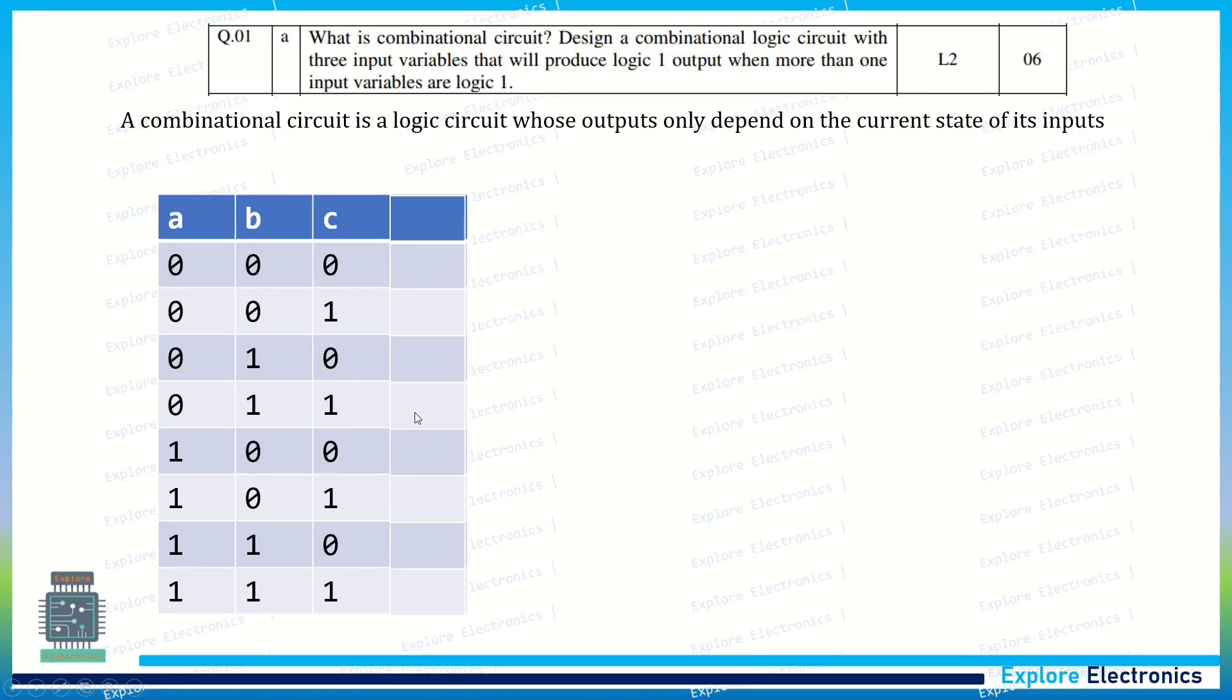Similarly, the last three cases we have more than one input as one, so we can take these three as one. This is my output. Here, 011 contains two ones, so I have taken one, and also in these three cases.